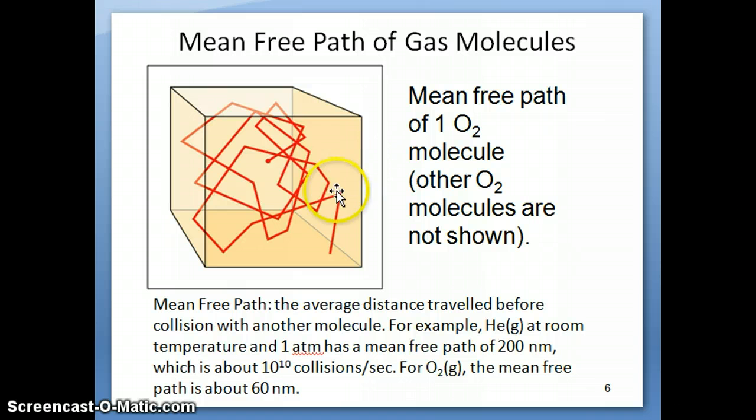Oxygen, which is bigger, we would expect to have a shorter mean free path. In other words, before it goes too far it should hit another gas. In fact, when you do these kinds of calculations, you find that the mean free path for oxygen would be only 60 nanometers, so it's quite a bit shorter than helium because of the size factor in this case.